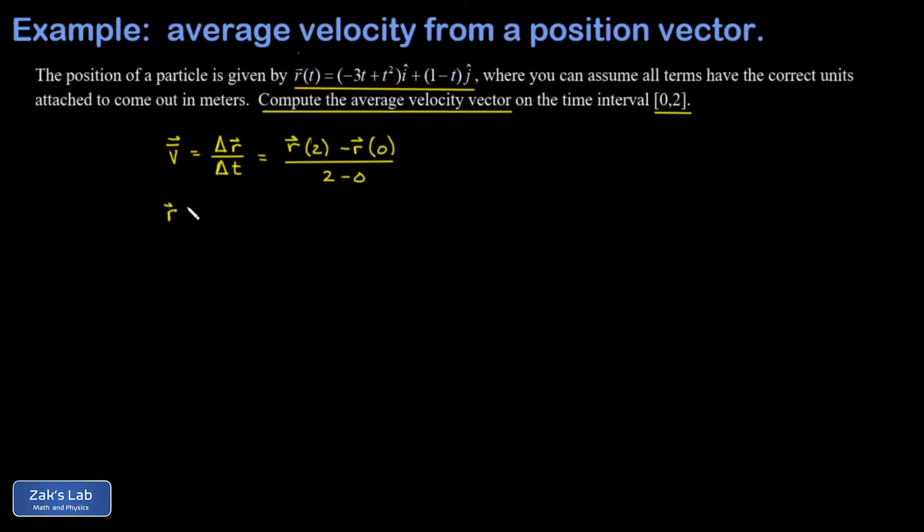So we need to get that final position vector, r of 2, and we just substitute in t equals 2. And for the coefficient of i hat, that gives me negative 6 plus 4, or negative 2 i hat. And the coefficient of j hat is negative j hat.